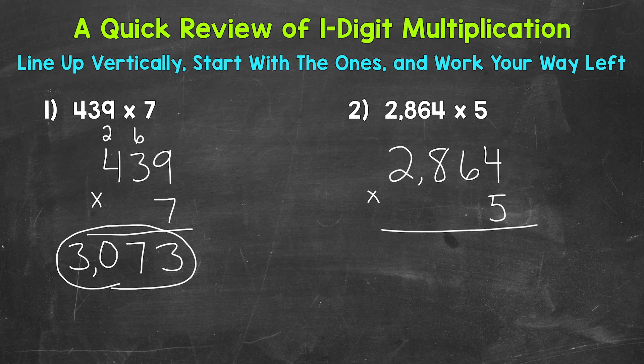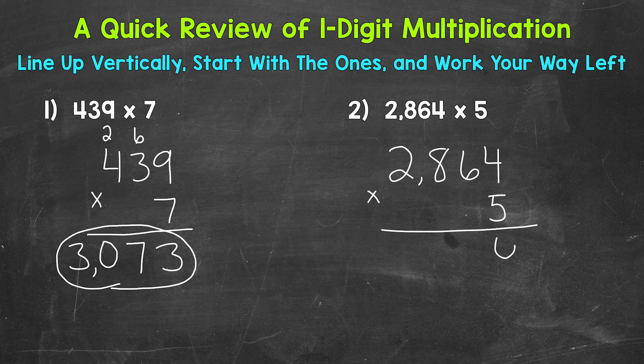Start with the ones, and then we will work our way left. So we have a 4 in the ones place. 5 times 4 is 20. Let's put our 0, carry the 2.